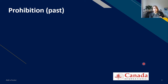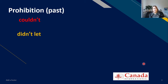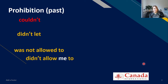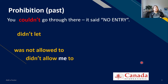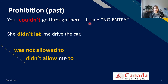Now for past prohibition — again, modal verbs in red and phrases in yellow. Couldn't is the only modal verb here; the rest are phrases: didn't let, was or were not allowed to, didn't allow someone to. Examples: 'You couldn't go through there, it said no entry.' 'She didn't let me drive the car.' 'I was not allowed to speak during the exam.' 'My dad didn't allow me to use the computer after 11 pm.'